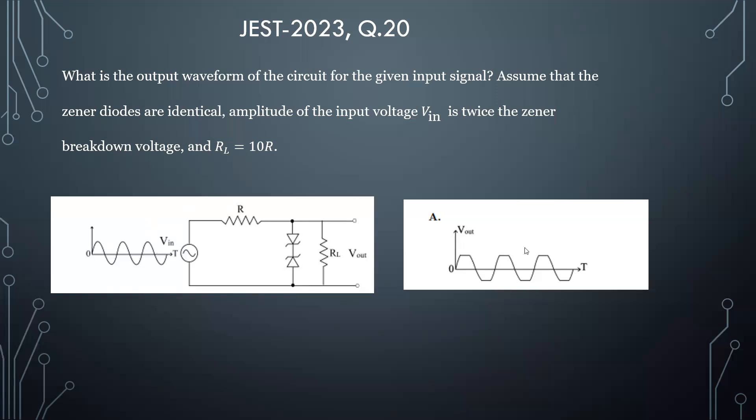Similar thing happens in the negative cycle. In negative cycle your diode two will be forward biased and diode one will be in reverse bias. Again, if the amplitude is less than the zener voltage, this path will not conduct.